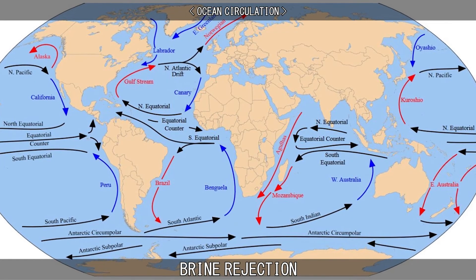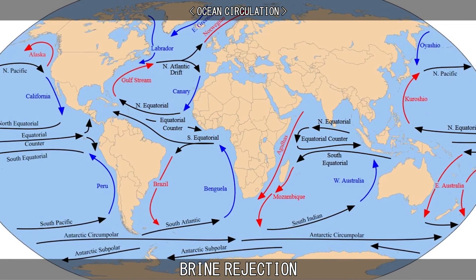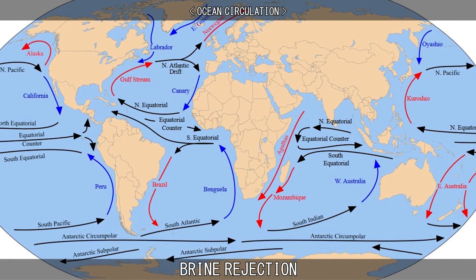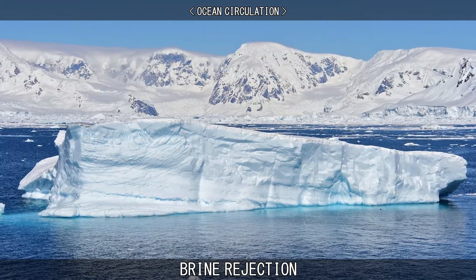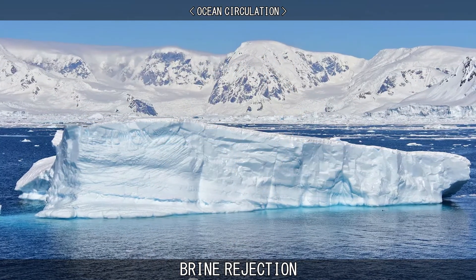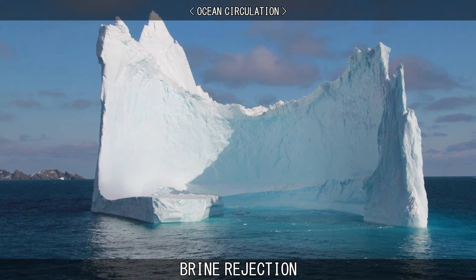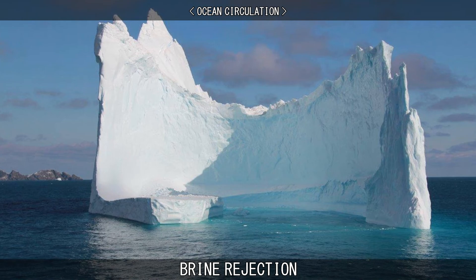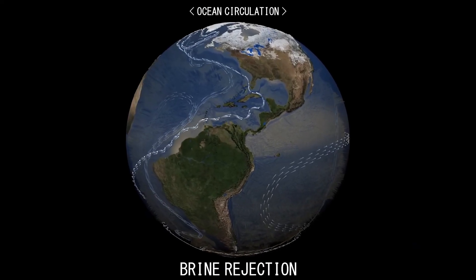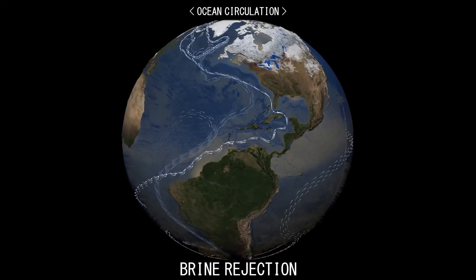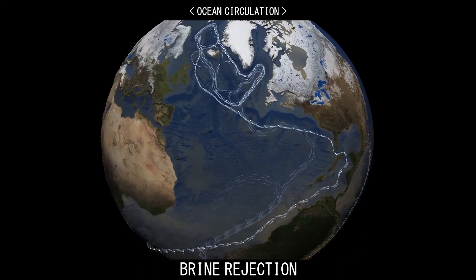The annual increase of ice plays a major role in the movement of ocean circulation and deep water formation. As sea ice freezes and brine rejection occurs, the denser, saltier water lowers into the ocean below. The dense waters that form in the Arctic are called North Atlantic deep waters, while the Antarctic bottom water forms in the Southern Hemisphere. These cold waters play an important role in the circulation of the Earth's oceans.